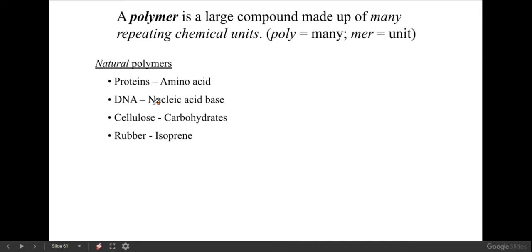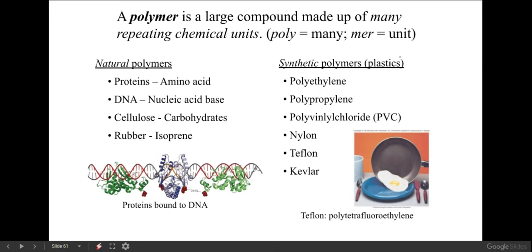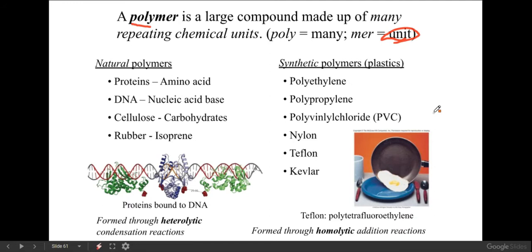Large chains are called polymers. Proteins, DNA, carbohydrates, and cellulose are all natural polymers; rubber is a polymer of isoprene. DNA is a polymer of nucleic acids; proteins are a polymer of amino acids. Now looking at synthetic polymers - plastics - it's all organic chemistry: polyethylene, polypropylene, vinyl chloride, nylon, Teflon. They all have many units - 'poly' means many, 'mer' is the unit - that get repeated over and over.